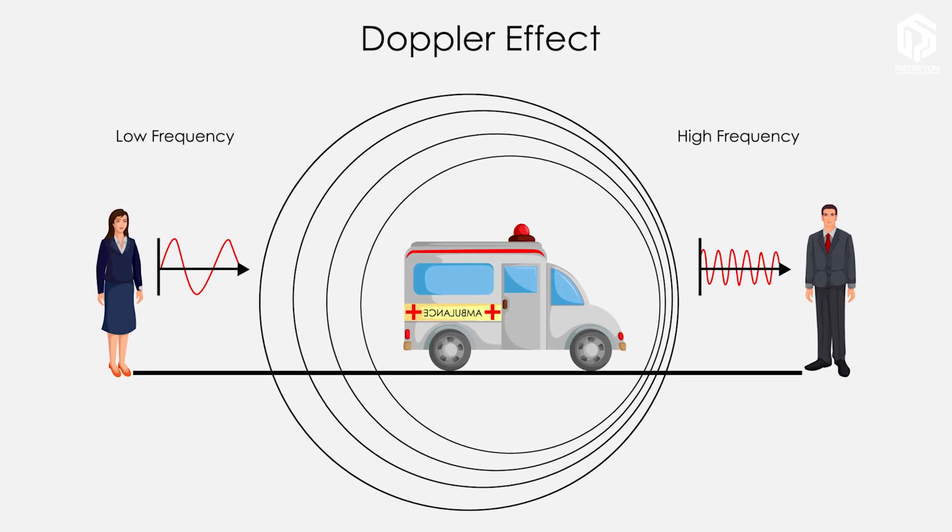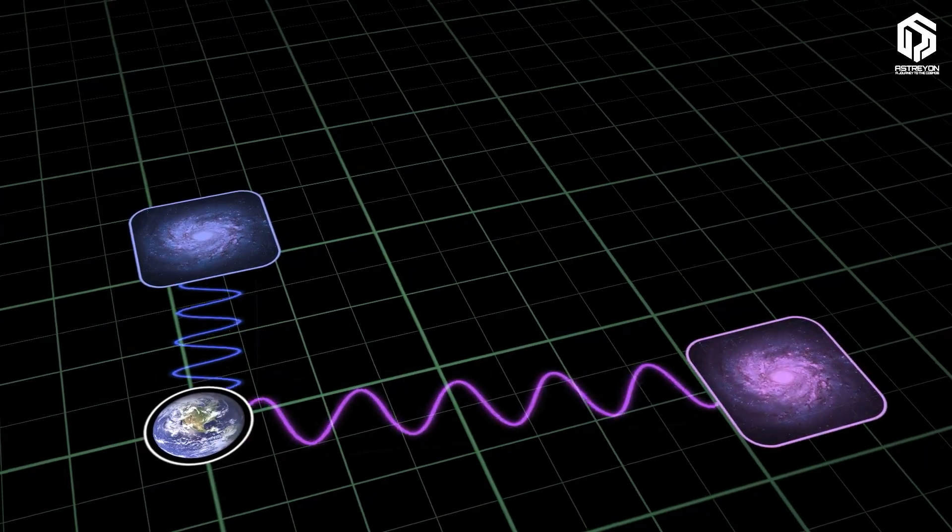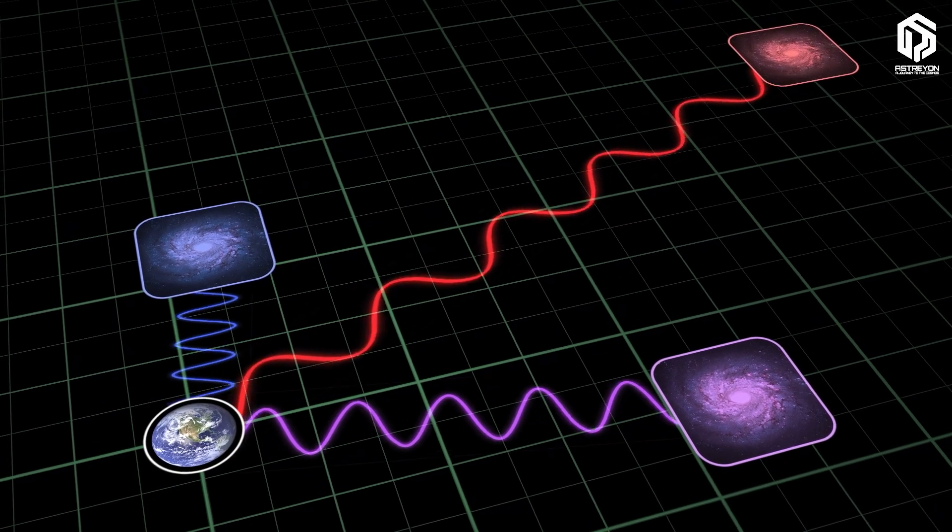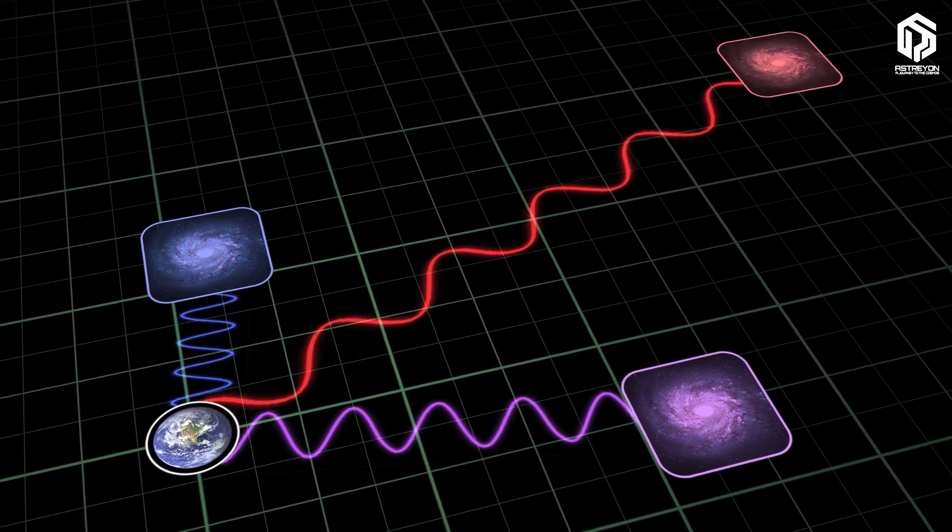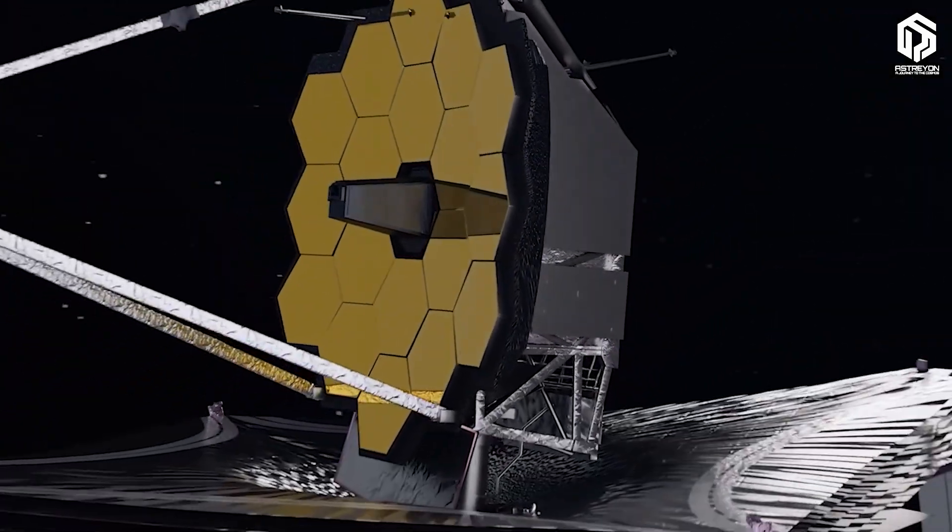Simply put, light that was originally blue and energetic turns red and infrared, and that's precisely where JWST comes into play. Its eyes are designed to see these stretched lights.